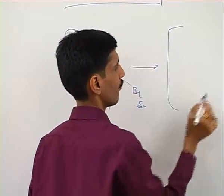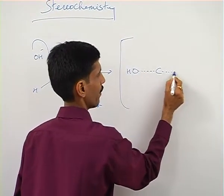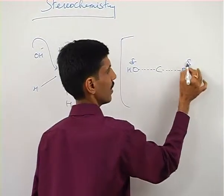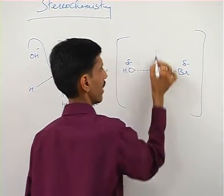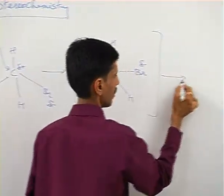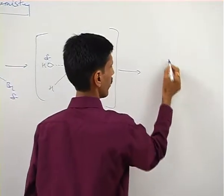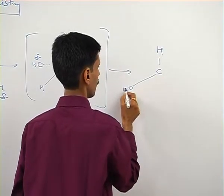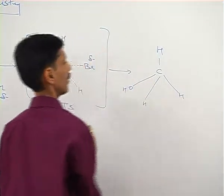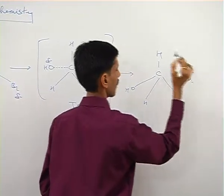It results in the formation of a transition state whereby the bond breaking and bond formation process needs to take place simultaneously, and then this transition state is of highest energy. It is unstable, gets converted into the final product and that is CH3OH and plus of course you get Br minus.